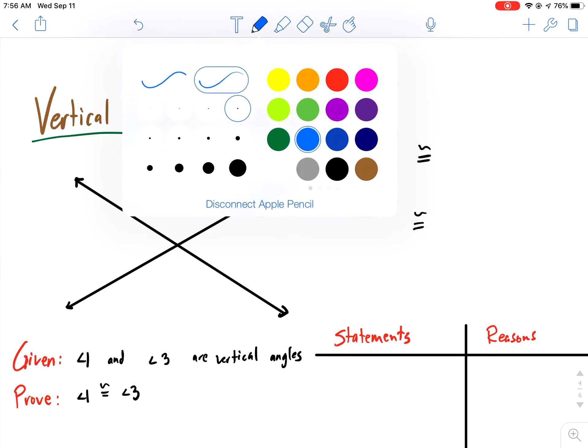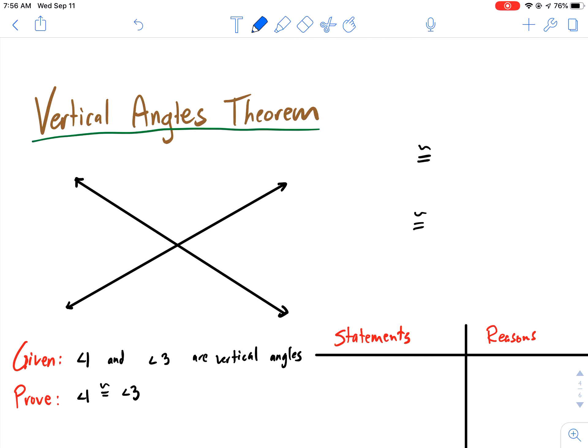So let's say we have angles, angle 1, I'm just going to call that 1, and let's call this guy 2, and let's call this guy 3, and this guy 4. So we have 1, 2, 3, 4.